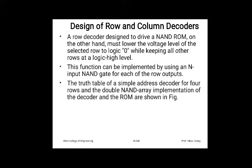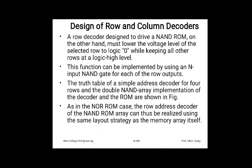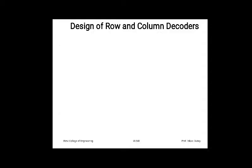This function can be implemented using a NAND gate for each row output. A NAND gate output is 0 when all inputs are 1, and this can be inverted for active output. The truth table for a simple address decoder for 4 rows with NAND array implementation is shown in the figure. As in the NOR ROM case, the row address decoder of the NAND ROM array is realized using the same layout strategy as the memory array itself.